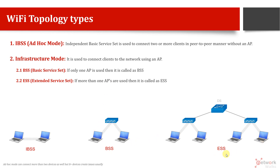ESS is used when we want to make a big network, like in enterprise office networks. We have multiple access points in each area of our office, building, or floors. Then we connect them through a central switch, LAN controller, or any other device, which is called the Distribution System (DS).